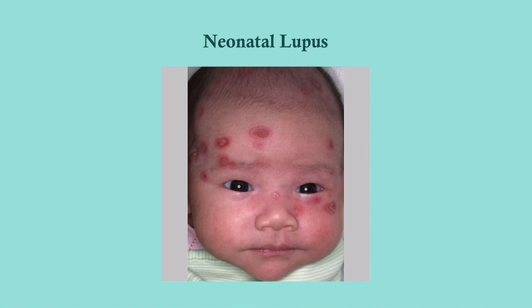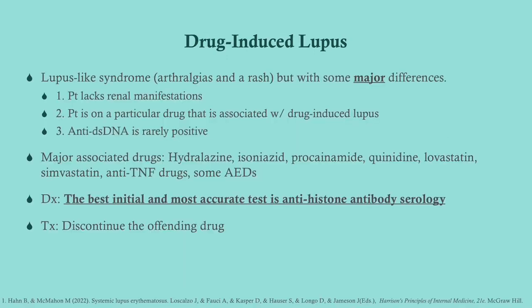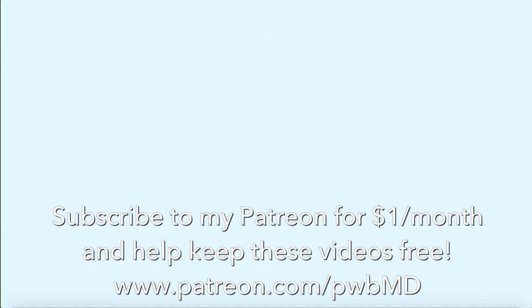Drug-induced lupus is a lupus-like syndrome; however, these patients will never develop renal dysfunction and will not have anti-dsDNA or anti-Smith antibodies. It looks like lupus in terms of arthralgias and rash, but look for a patient who recently started a new drug. The best initial and most accurate test is the anti-histone antibody, which is associated with drug-induced lupus. Treatment is simply to discontinue the offending drug.